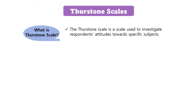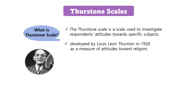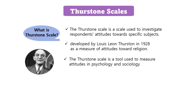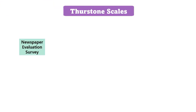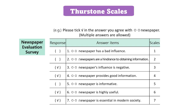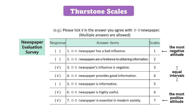The Thurstone scale is a scale used to investigate respondents' attitudes towards specific subjects. It was developed by Louis-Leon Thurston in 1928 as a measure of attitudes toward religion. The Thurstone scale is a tool used to measure attitudes, mainly in psychology and sociology. As shown in the questionnaire, the scale includes the most negative attitude at one end, the most positive attitude at the other end, and various attitudes with equal intervals in between. Respondents simply need to check the box that best aligns with their opinions.